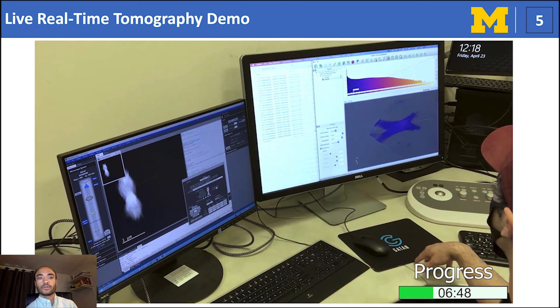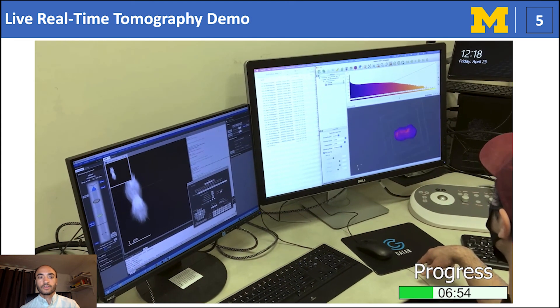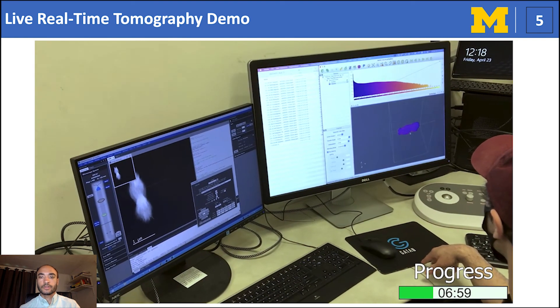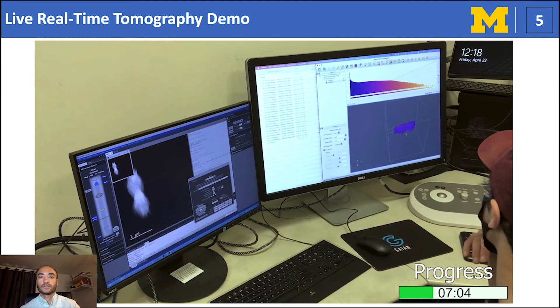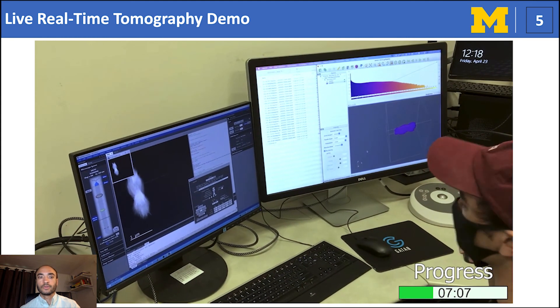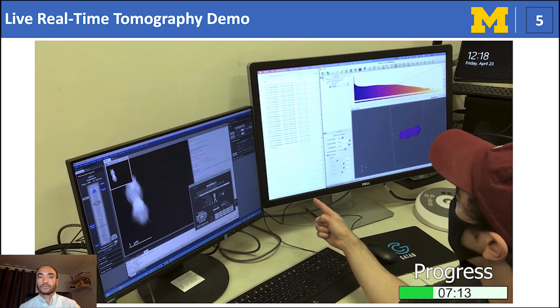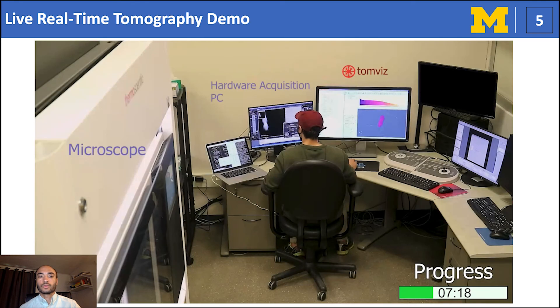Since we are only at 33% of the experiment, only a minimal amount of information is available. However, even at this stage, we are ready to discern general morphology. I can observe similarities between the 2D projection images and intermediate reconstruction to begin drawing scientific hypothesis of my specimen. While the experiment is ongoing, I can easily discuss the intermediate progress with any collaborators in the room. Now, let's continue and collect more projections.